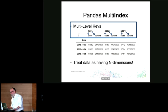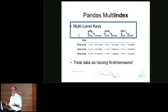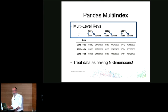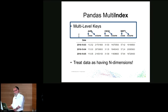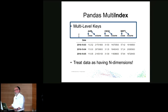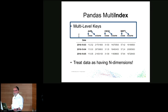A multi-index is where you have multiple levels of keys in your index — level zero points to level one. For example, two levels on the columns and one level on the rows gives you three-dimensional data. There used to be a three-dimensional data structure in Pandas called a panel — which is actually where Pandas gets its name: it stands for panel data. However, panel data has been deprecated in favor of multi-level keys, because with multi-level keys you can specify any number of dimensions and represent it in two, so you can see clearly what's going on.